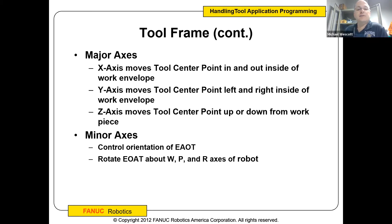So you've got your major axis — X, Y, and Z — that's going to move your tool center point. That's the coarse adjustment, basically. Then your minor adjustment is going to control the orientation of the end-of-arm tool. EOAT stands for end-of-arm tool. And so you rotate your EOAT about the yaw, pitch, or roll axis with the minor axis.